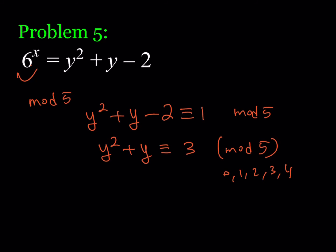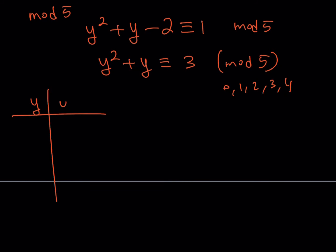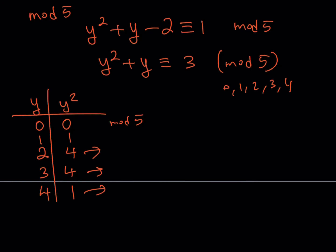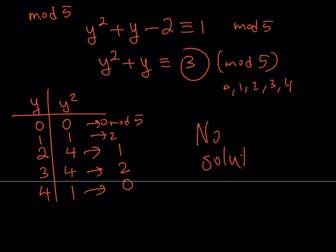We check all residues 0 through 4 in mod 5. If y ≡ 0: y² + y ≡ 0; if y ≡ 1: y² + y ≡ 2; if y ≡ 2: y² + y ≡ 1; if y ≡ 3: y² + y ≡ 2; if y ≡ 4: y² + y ≡ 0. We never get 3 mod 5, which means this equation has no solutions. This brings us to the end of this video — thank you for watching.